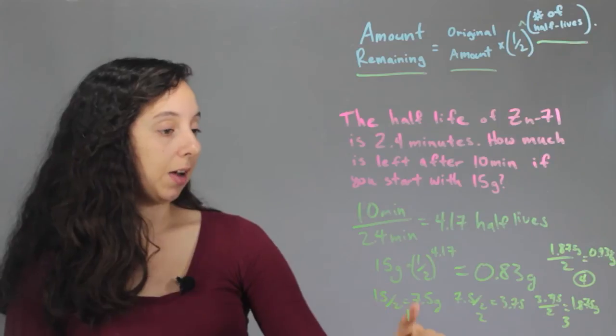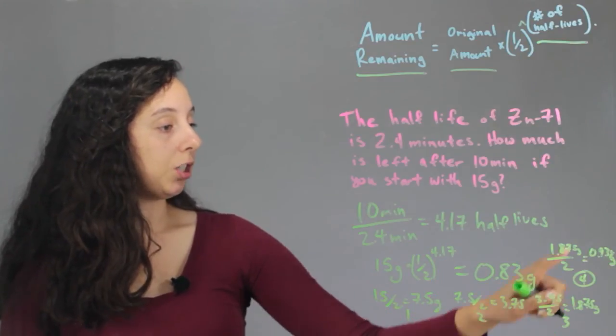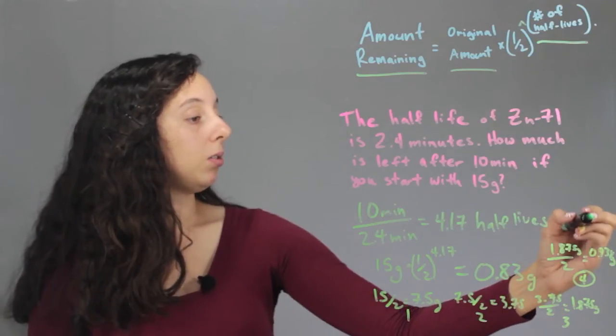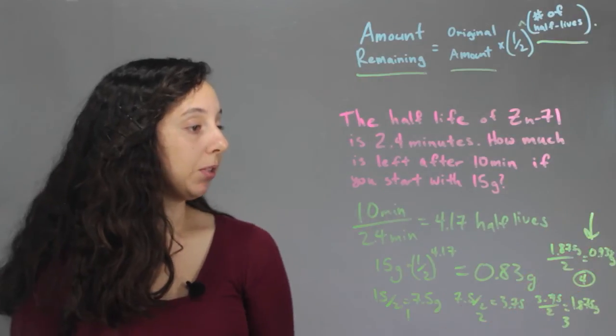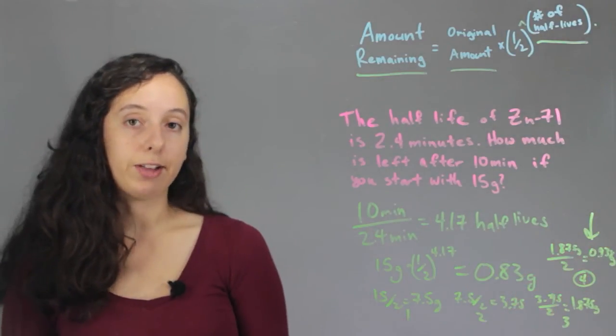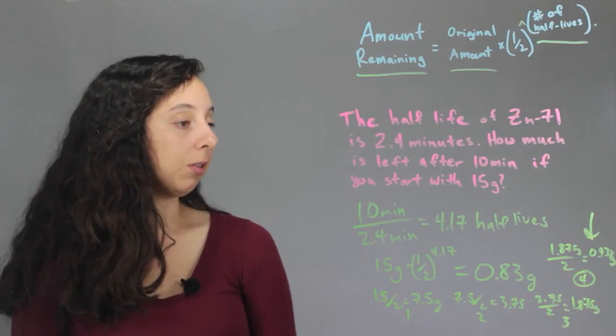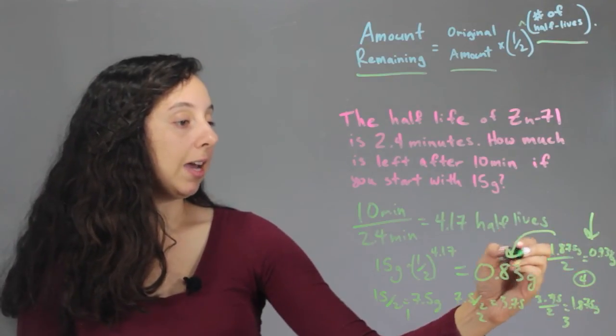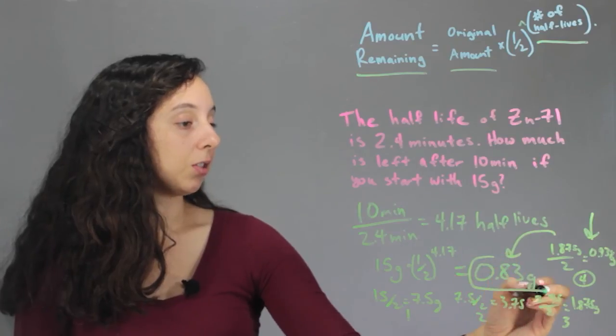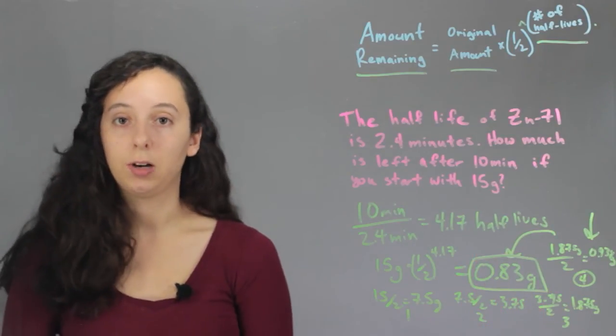So, if we naturally just divide each number by 2, 4 times, we're at 0.93 grams. And we know that we had a little bit over 4 half-lives, so our number should be a little bit less than 0.93. And remember, we got 0.83 as our answer, so that's correct. We did the problem correctly.